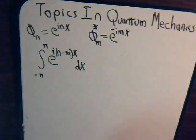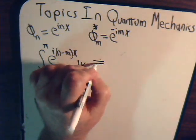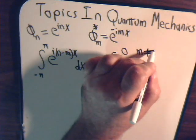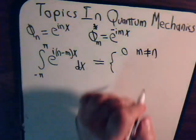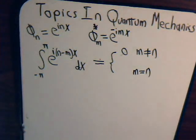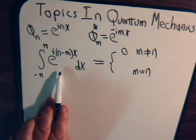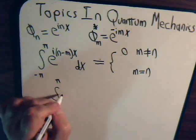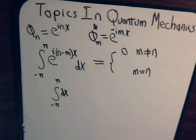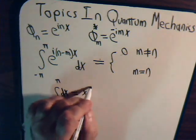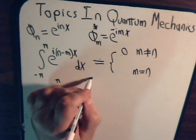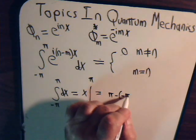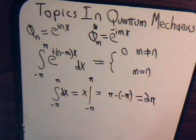So this equals zero when m does not equal n. Now, what happens when m equals n, when they're the same? Then this would be e to the zero, which is one. So now all we have is the integral from minus pi to pi of dx. And that equals x, going from minus pi to pi. And that equals pi minus negative pi, or that equals two times pi.